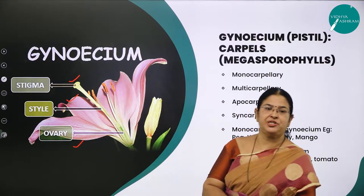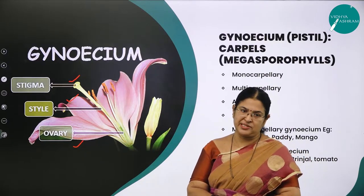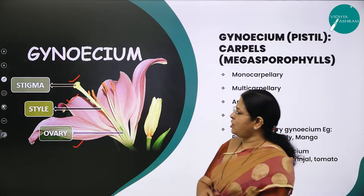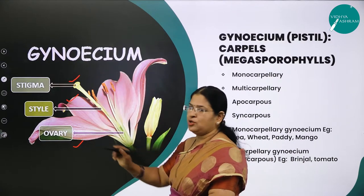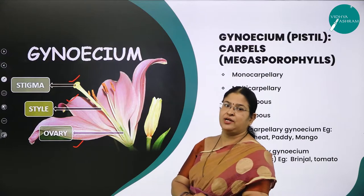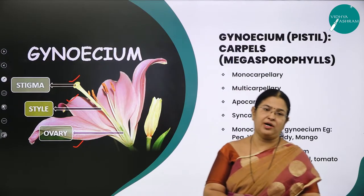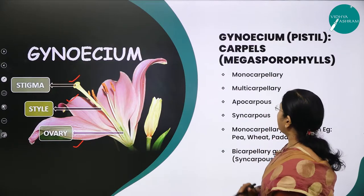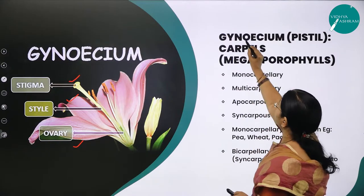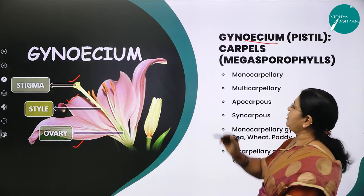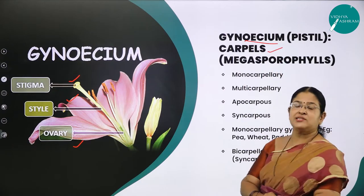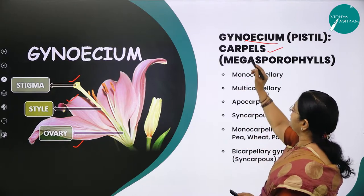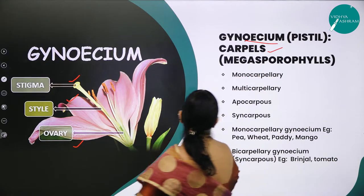Gynoecium is otherwise called pistil, and it consists of three very important parts: stigma, style, and ovary. The ovary contains ovules. Now, gynoecium is made up of units called carpels — just as stamens were the units for androecium, the units for gynoecium are called carpels.